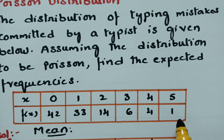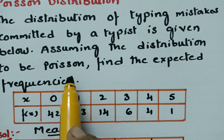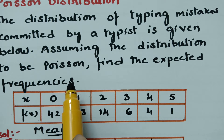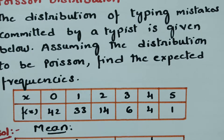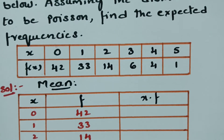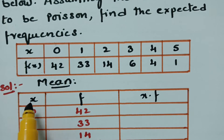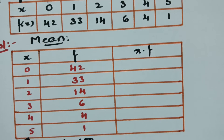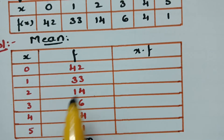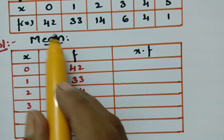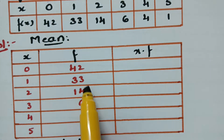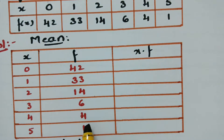We have to assume a Poisson distribution, and for Poisson distribution we need the mean value — mean lambda is to be known. For finding the mean value, the x values are 0, 1, 2, 3, 4, and 5, and the frequencies are 42, 33, 14, 6, 4, and 1.